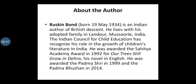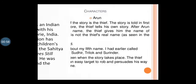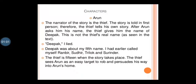About the author: Ruskin Bond was born on 19 May 1934. He is an Indian author of British descent. He lives with his adopted family in Landour, Mussoorie, India. The Indian Council for Child Education has recognized his role in the growth of children's literature in India. He was awarded the Sahitya Akademi Award in 1992 for 'Our Trees Still Grow in Dehra', his novel in English.